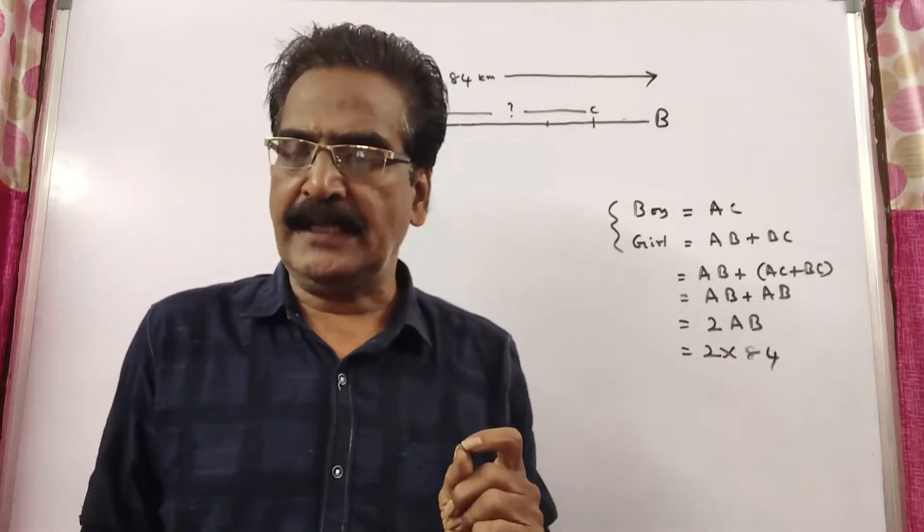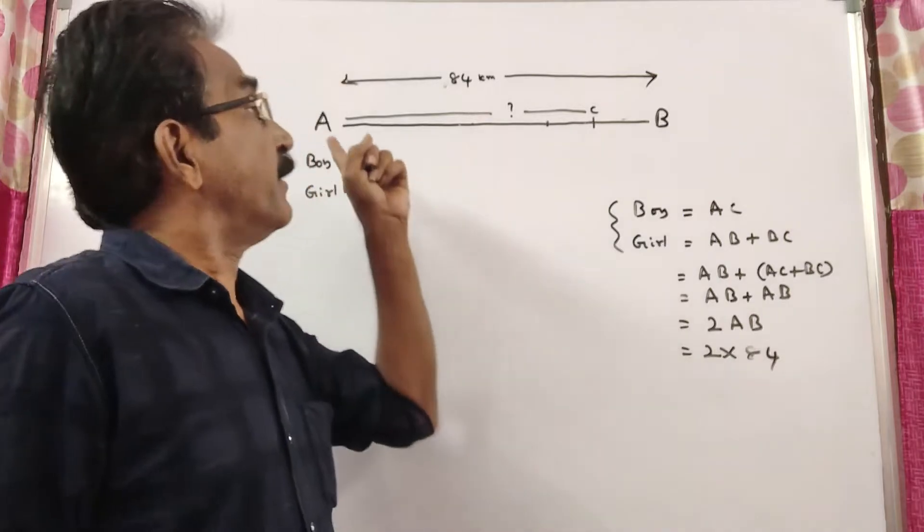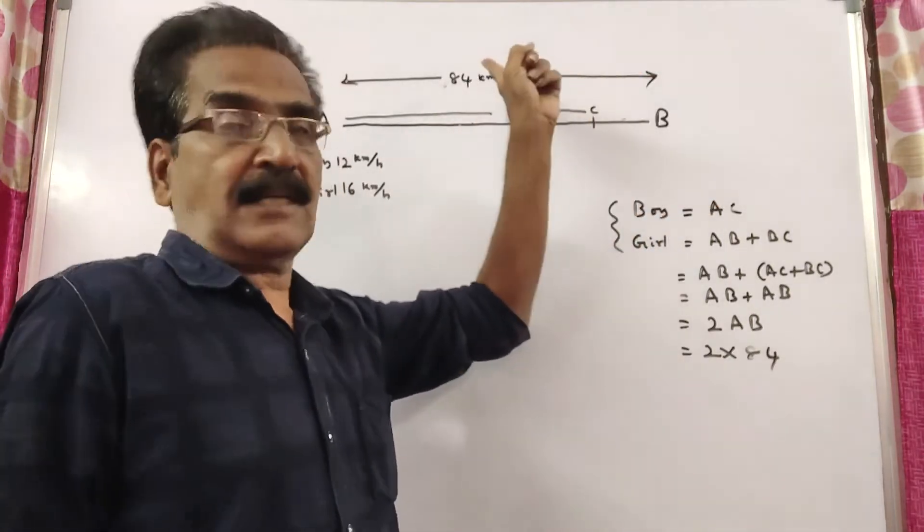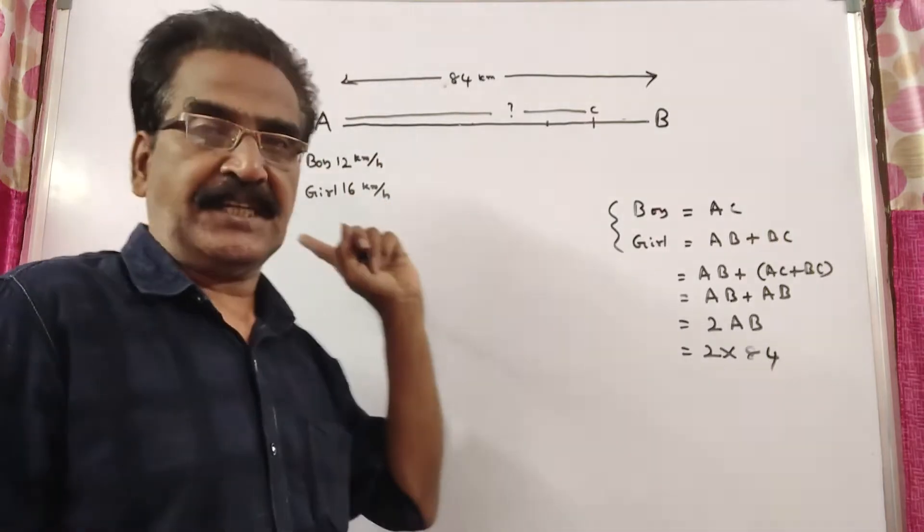The problem is given in the description box. A boy and a girl travel from A to B, a distance of 84 kilometers, at 12 kilometers per hour and 16 kilometers per hour.